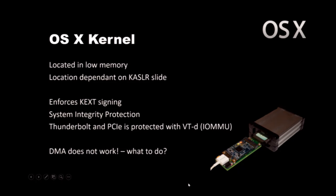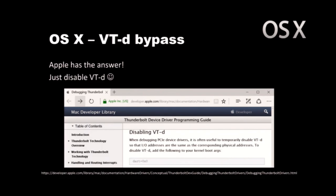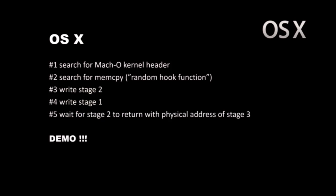So what can we do to change that? We can visit Apple's website. Apple on their website tells us in plain text how to disable VTD. In OSX, first by using DMA we search for the Mach-O kernel header — Mach-O is the binary format for binaries on Mac, including the kernel. Then we search for a random function to hook — I hooked memcpy in this example. Then we write the stage 2 code into memory of the target computer, then the stage 1 code. We wait for stage 2 to return with the physical address of stage 3, write the stage 3 code, and then it's demo time. In this demo I will show how to disable VTD to gain DMA access, then dump the memory and unlock the computer.